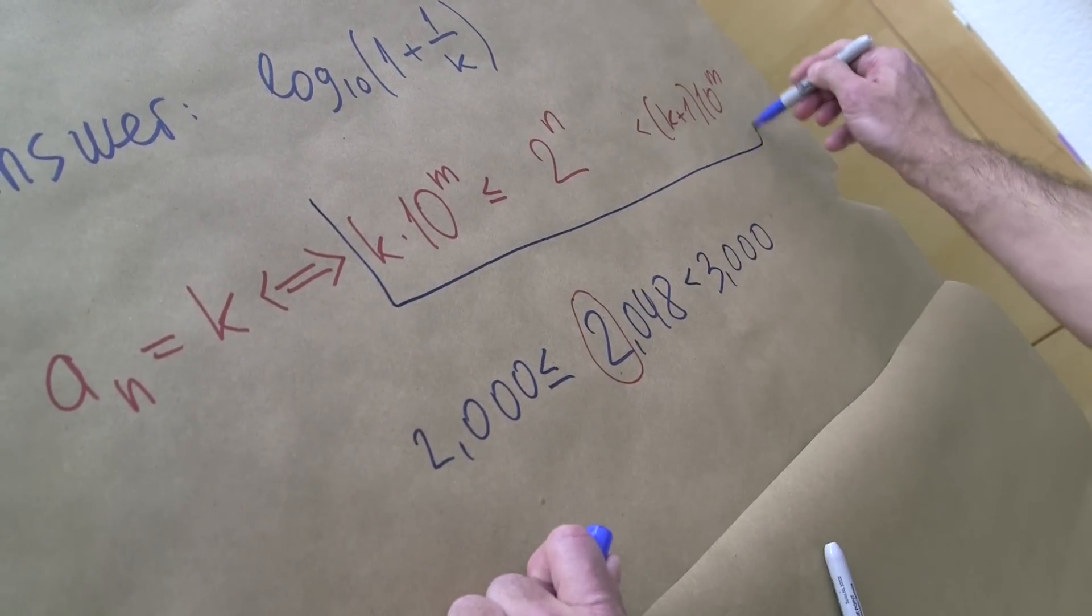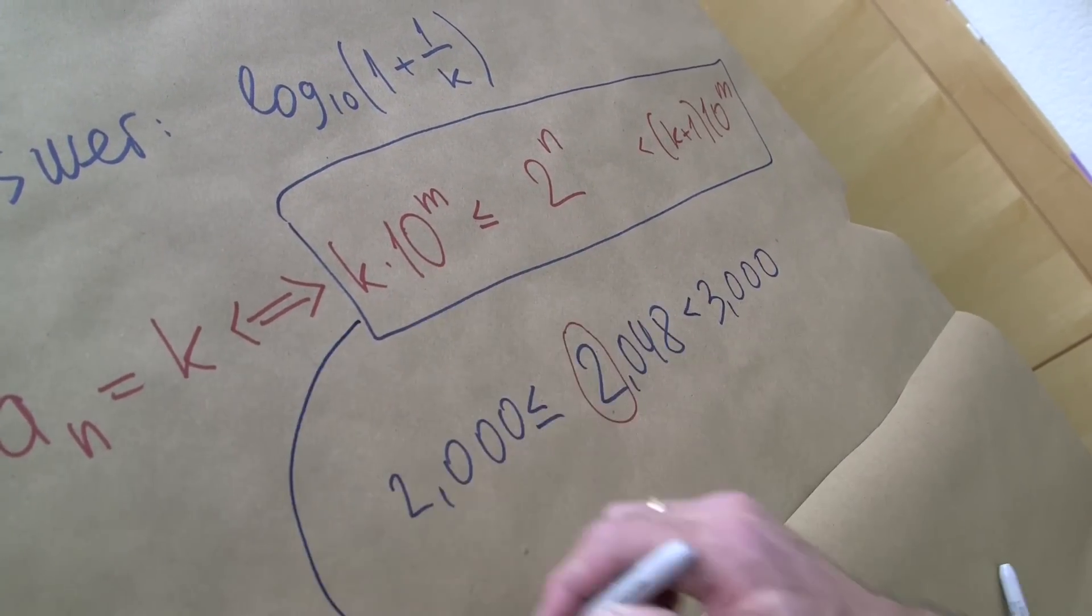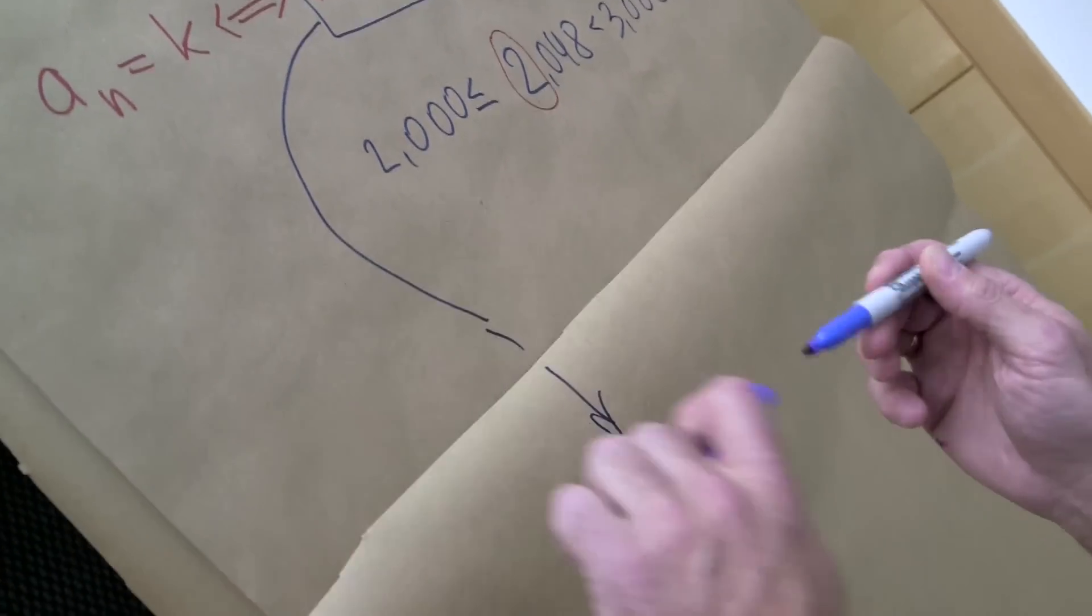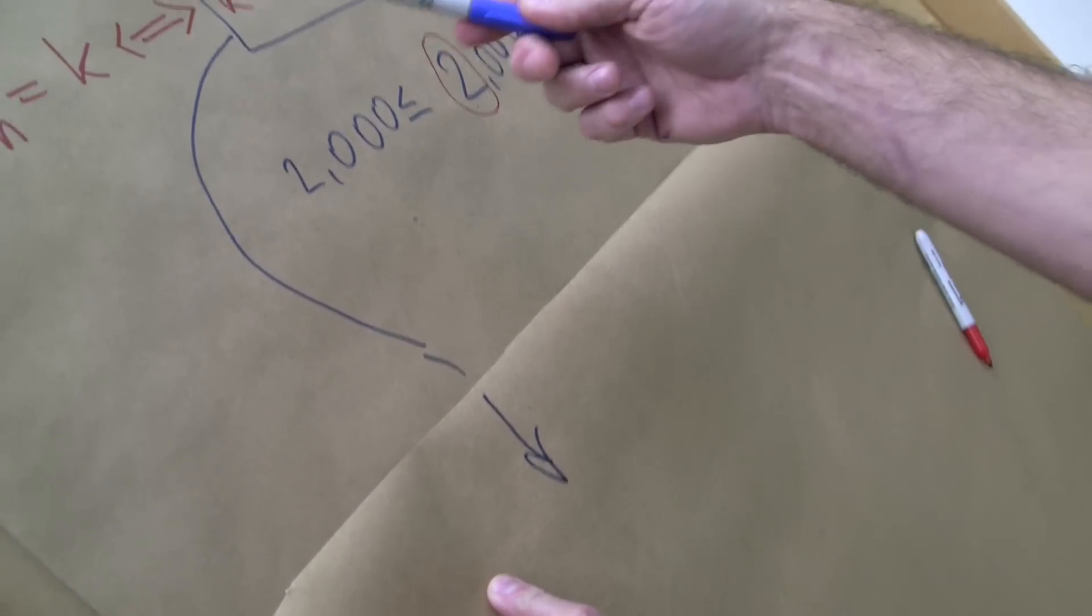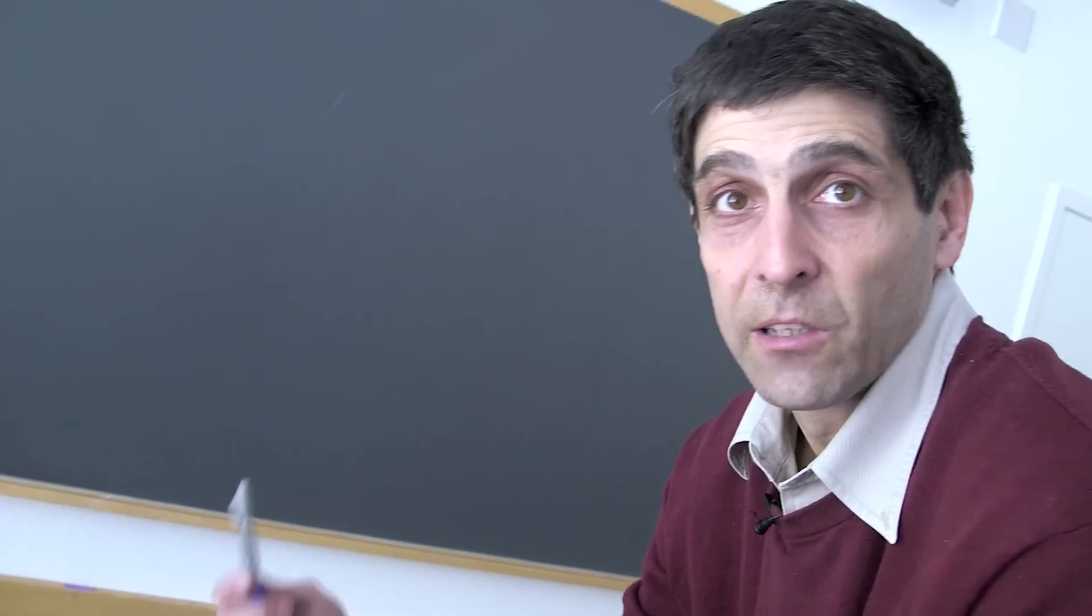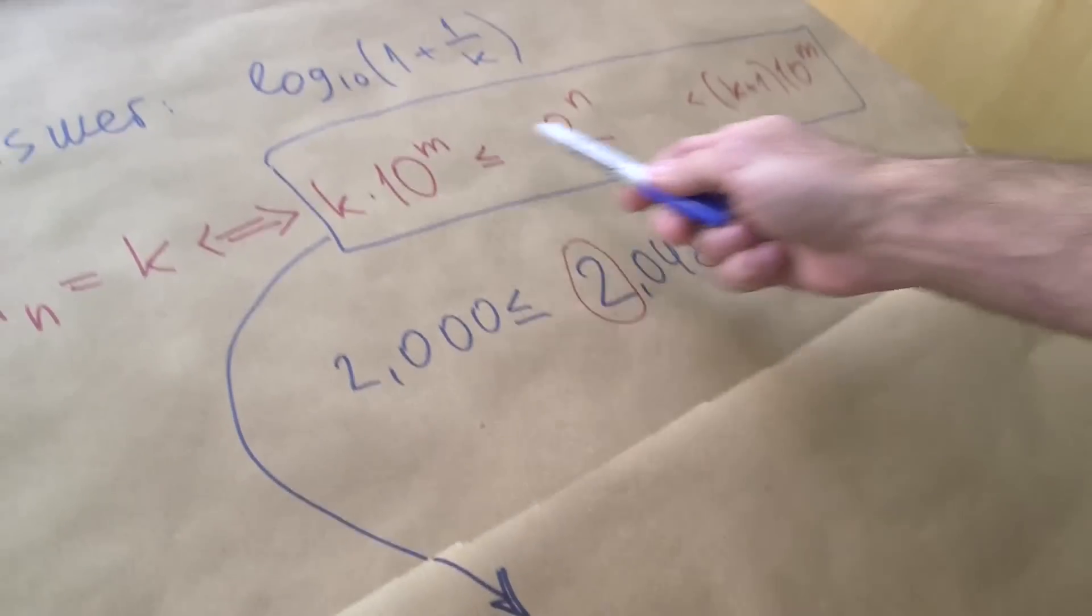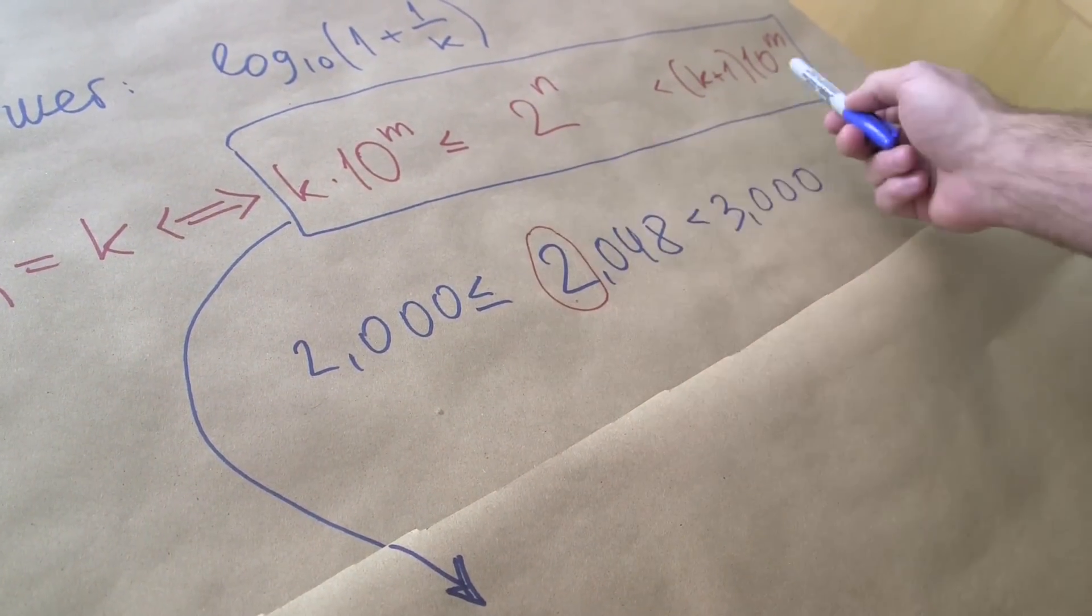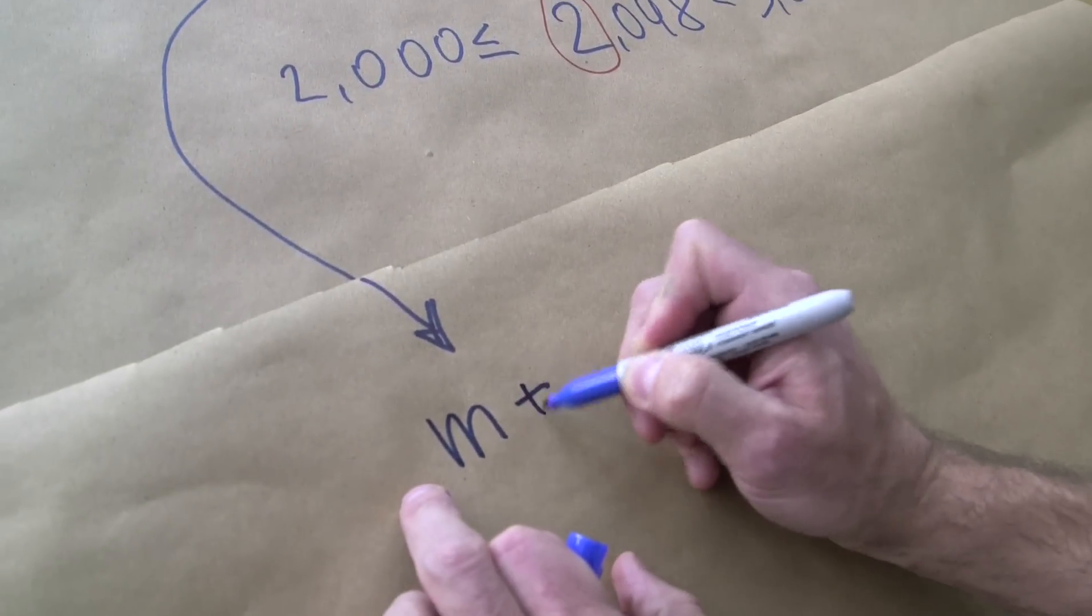I'm going to take this inequality, move it to another piece of paper and study it. The first and probably the crucial thing to do here is to take logs. Instead of this we can take logs of all these sides and we'll see that we have m plus log k.